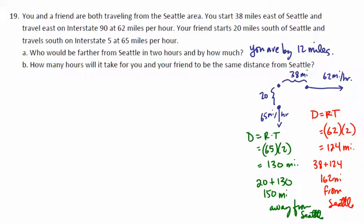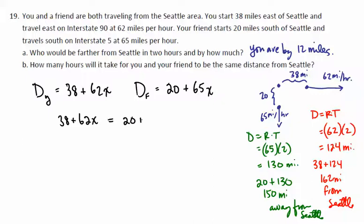Now, how many hours will it take for you and your friend to be the same distance from Seattle? Well, we don't know the time in this case. So the time that you're both going to travel, even though you're starting at different distances, you're both going to travel the same time. So your distance from Seattle, let's call that D sub Y for your distance. So your distance from Seattle is, again, 38 miles to start plus 62 times X or times T. Your friend's distance is starting 20 miles away and then 65 miles per hour. And what we want to do is find out when those two distances will be the same.